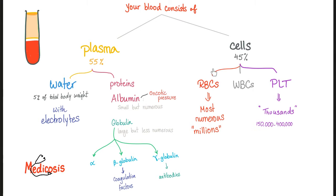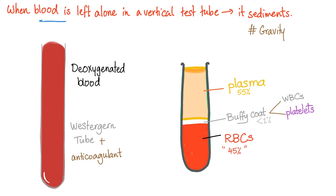Your blood cells include red blood cells — the most numerous — white blood cells, and platelets. When you leave your blood in a vertical test tube, it will sediment due to gravity. Once your blood sediments, you'll find red blood cells at the bottom, plasma on top, and a very small tiny layer called the buffy coat, which has the white blood cells and the platelets. Sometimes the buffy coat will appear green because of the neutrophils.